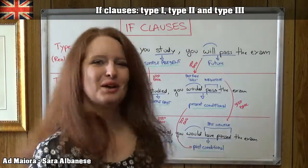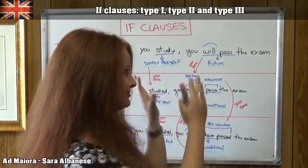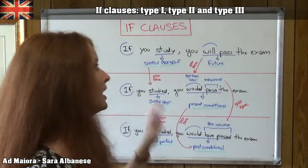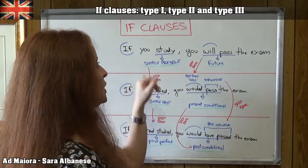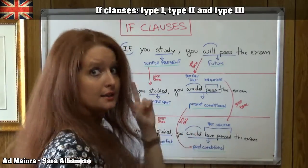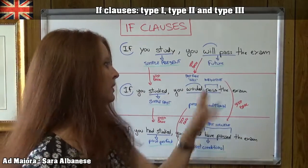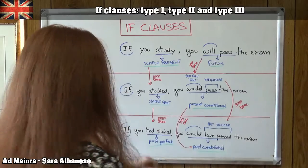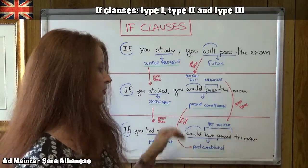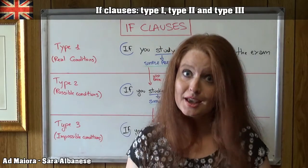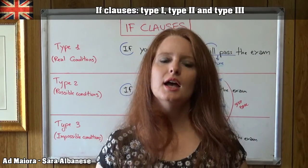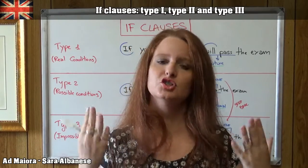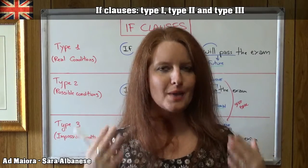If you just think about this fixed structure, you will never make mistakes again. To summarize: for Type 1, the if-clause uses simple present and the main clause uses future with WILL. For Type 2, take one step back — if-clause with simple past, main clause with present conditional. For Type 3, step back again — if-clause with past perfect, main clause with past conditional. I hope this is useful for you to understand. If you have any questions or doubts, please leave a comment below and I will be absolutely glad to answer.